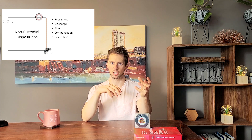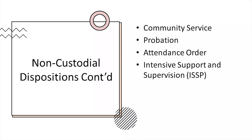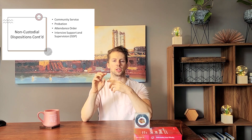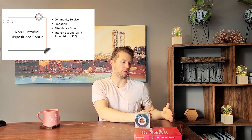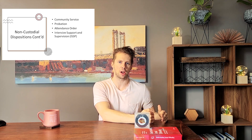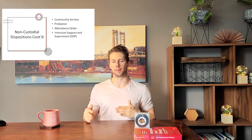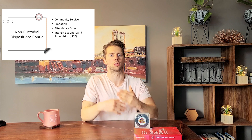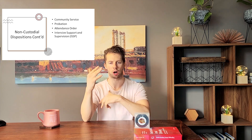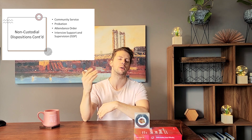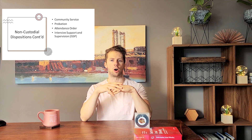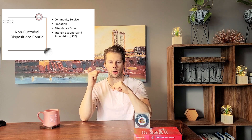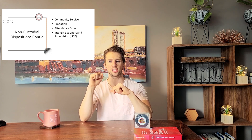Other non-custody dispositions include compensation or restitution — restitution being more about giving back through volunteer hours or an apology. More commonly familiar options include community service, a probation order, and an attendance order, which requires attending a treatment program. If a youth goes AWOL from that program it is considered a violation of their sentence, resulting in new charges — an example of what's called an administrative offense.